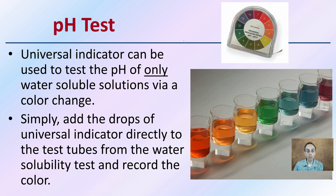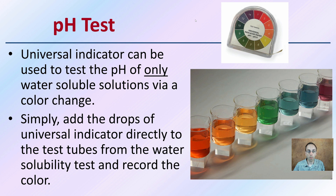To get more precise results, we can also do pH testing using a universal indicator. It can be used to test the pH of only water-soluble substances via a color change, so if a substance fails the water solubility test, the pH test should not be used. Simply add drops of the universal indicator directly to the test tube from the water solubility test, record the color, and match it to the pH scale.